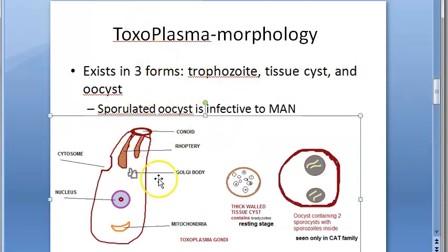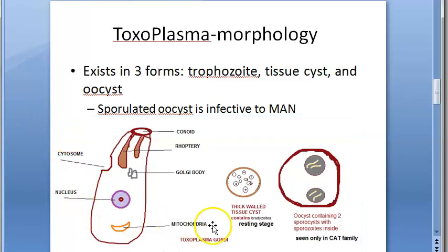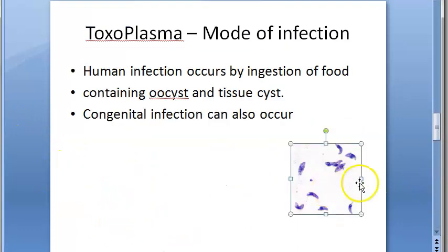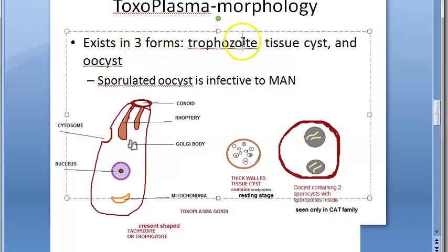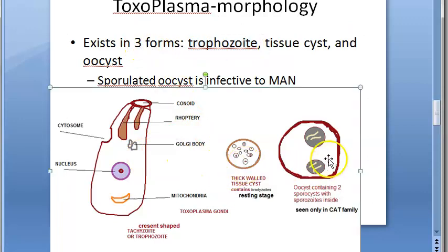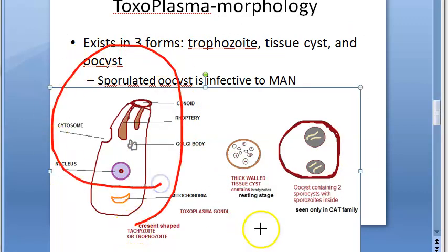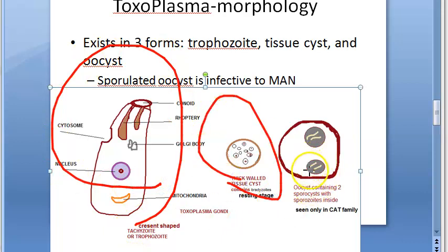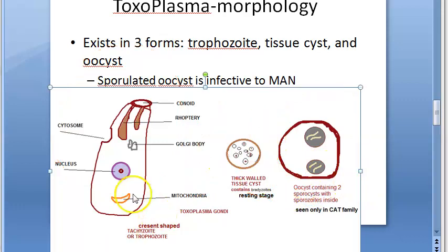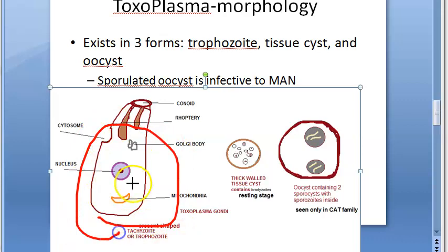As you can see, they are crescent-shaped and obligate intracellular. There are three forms: the trophozoite form (also called the tachyzoite), the tissue cyst form, and the oocyst form. The oocyst is thick-walled. The trophozoite, also called the tachyzoite, is crescent-shaped.